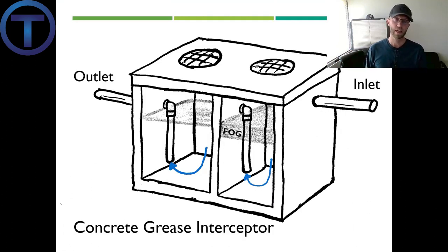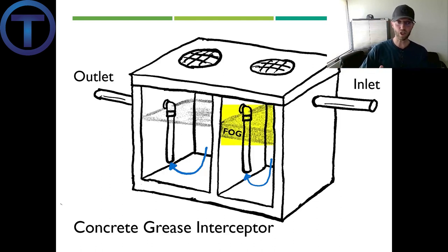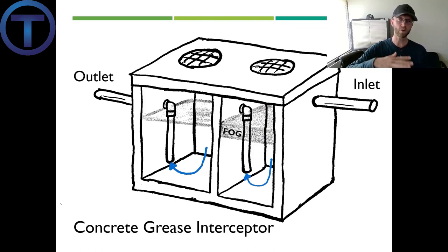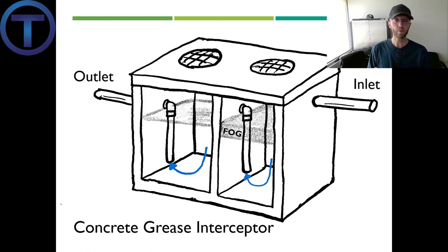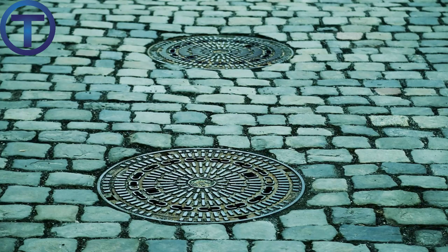Section 1003.3 talks about grease interceptors. For many years, the most basic type was a concrete vault in the ground, as illustrated here. From the inlet, waste goes into the concrete interceptor, and the fats, oils, and grease — that's FOG — float to the top of the first chamber. The rest of the liquid is pushed through to the next chamber, where FOG again floats to the top, and only the liquids pass out the bottom to the outlet. This separates all the grease by gravity. Periodically it has to be cleaned out — there are manholes, and if you drive by a restaurant you'll see two manholes right next to each other, which likely indicates a grease interceptor below ground.